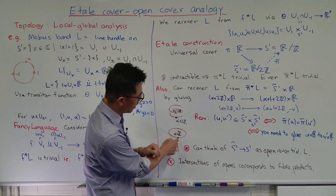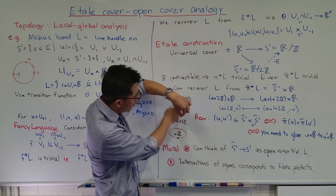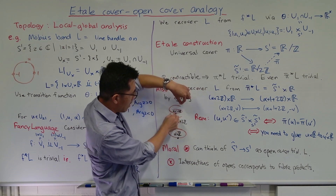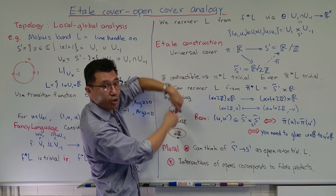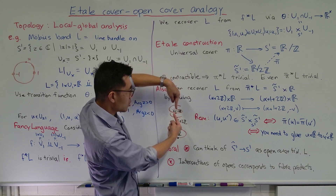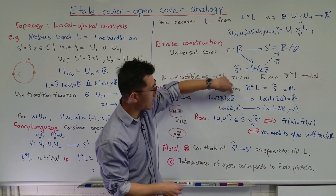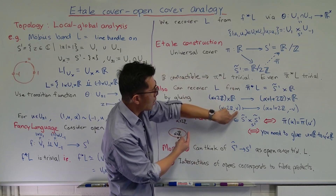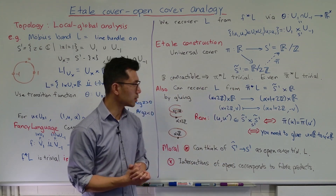So the next question is how do you recover L from the vector bundle pi-bar-upper-star L? This pi-bar-upper-star L is trivial in the sense that it equals S1-tilde cross R. Let's pick a point — the Möbius band is a line bundle, so above this point you have a copy of R. When you pull back upstairs, that vector space becomes a vector space above alpha plus 2Z, and another one-dimensional vector space above alpha plus 1 plus 2Z. So you get two of them, and you want to glue them together. Those two copies of R — you want to flip the orientation so they go to the negatives. In other words, the copy of R above alpha plus 2Z: if you pick an element V, you have to map it over to minus V. That's how the gluing works.